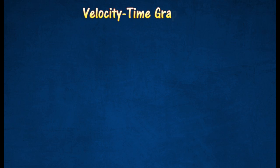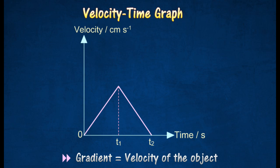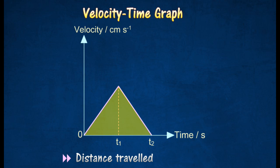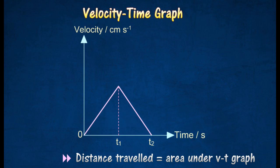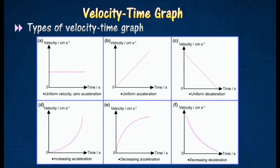A velocity-time graph is constructed by having the velocity as the vertical axis and the time as the horizontal axis. It shows how the velocity of an object changes with time. The gradient of a velocity-time graph represents the acceleration of the object, and the area under a velocity-time graph represents the distance traveled by the object.